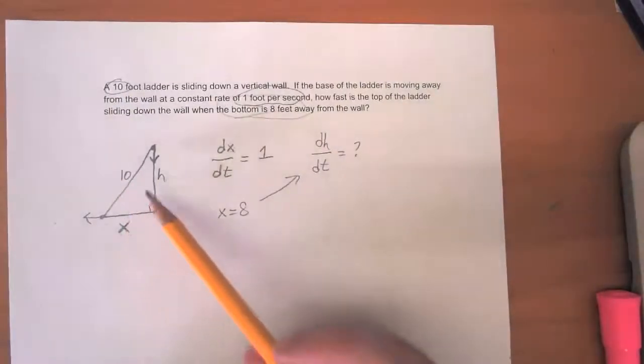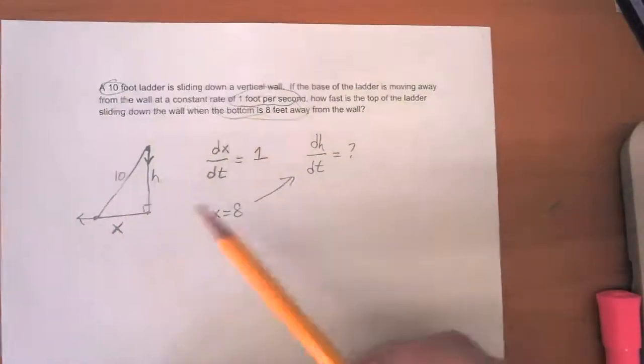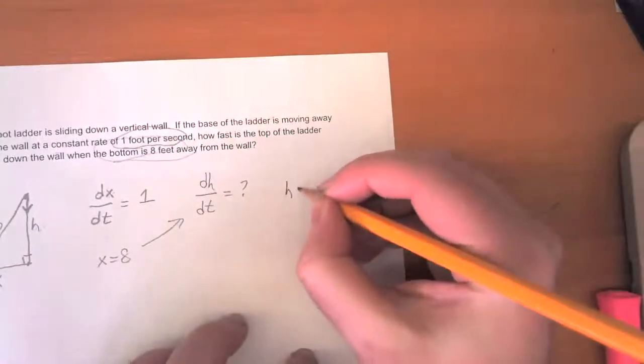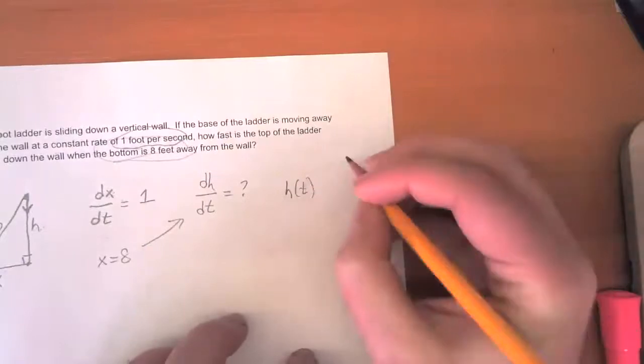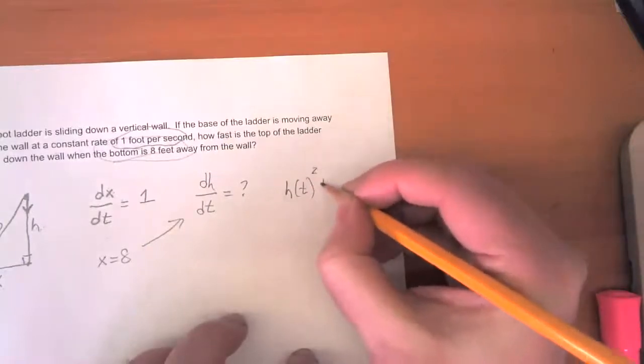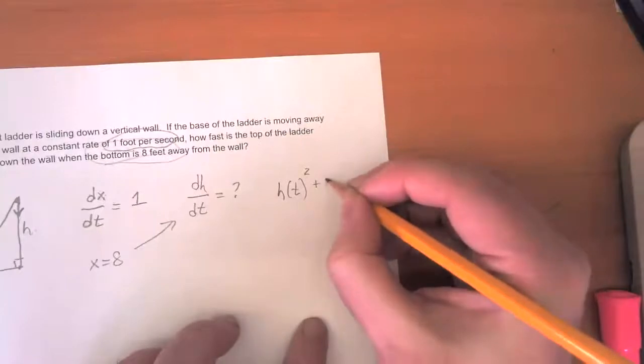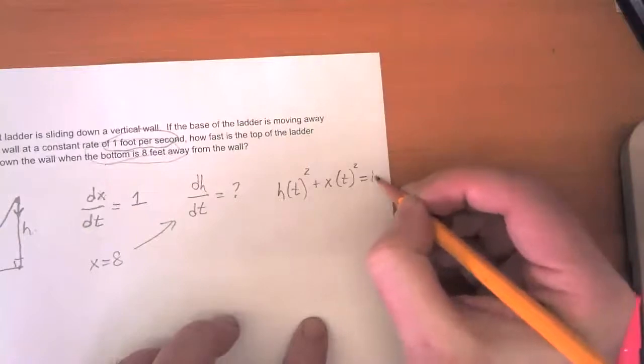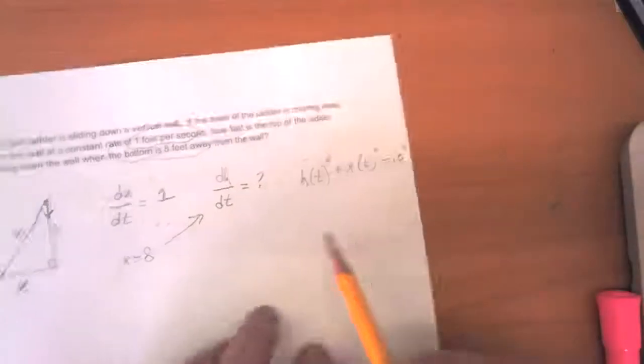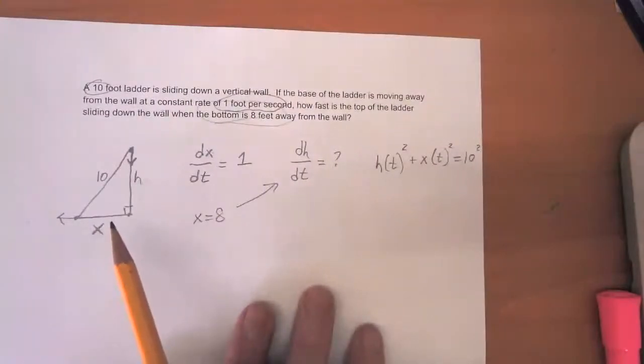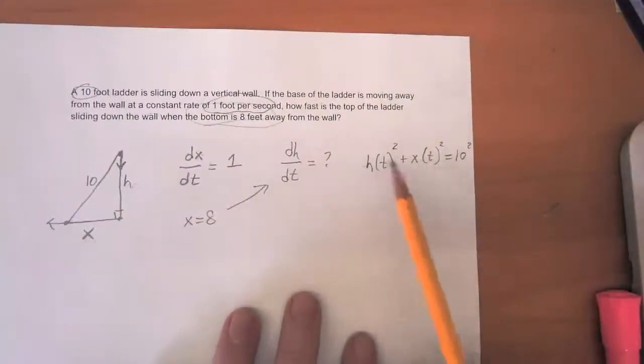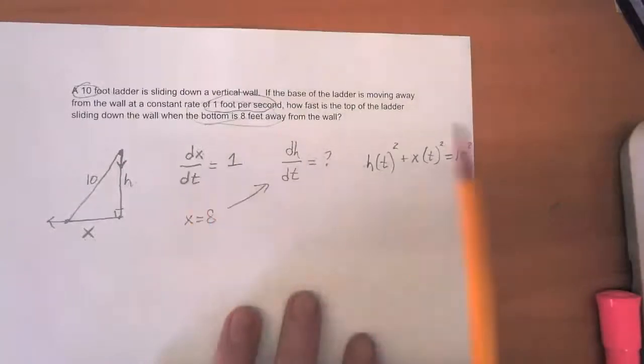Well, this is a right triangle. This is always going to be a right triangle. So what we know is that at any moment in time, if we take the height of the ladder and square it and add it to the length of the base of the ladder and square it, that's got to be equal to 10 squared because of the Pythagorean theorem. So what we have is we have these two functions related, and so we're going to be able to relate their rates as well.